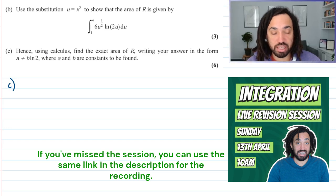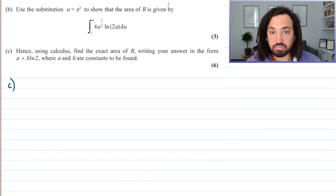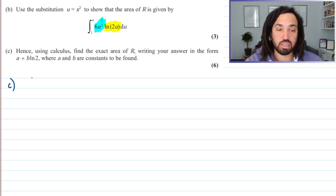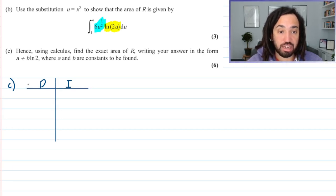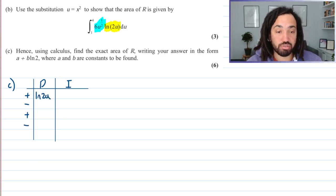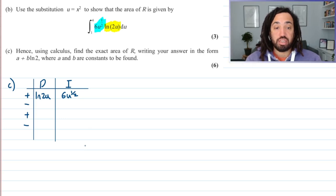Part C: hence, using calculus, find the exact area, writing it in the given form. We just have to do this integration. I've spotted that this is two functions multiplied together, so this is primed for integration by parts. I use what's called the DI method. We put plus, minus, plus, minus down the side. Any logarithm must go into the differentiation slot, and what's left over — the other function — is 6u to the half.